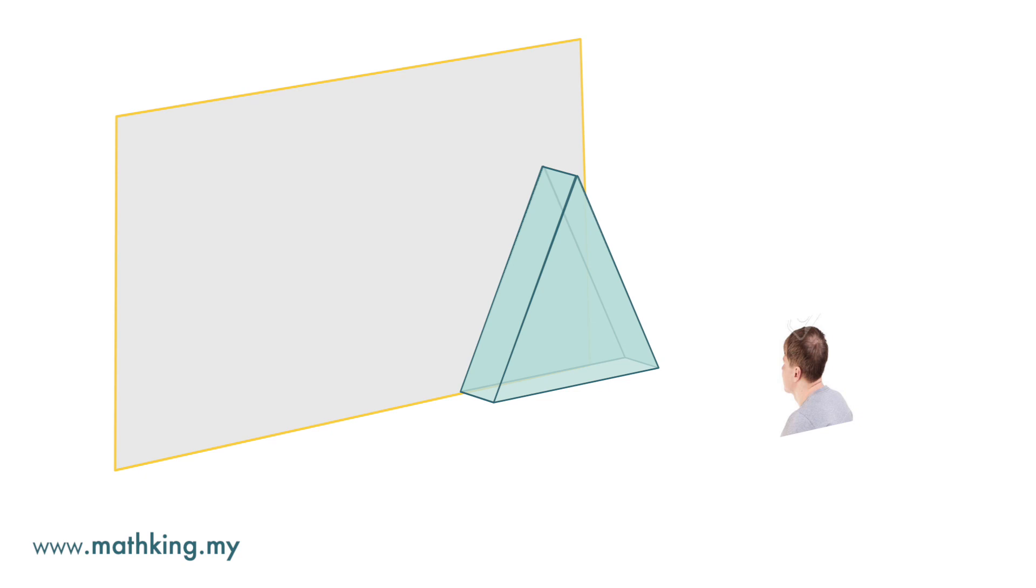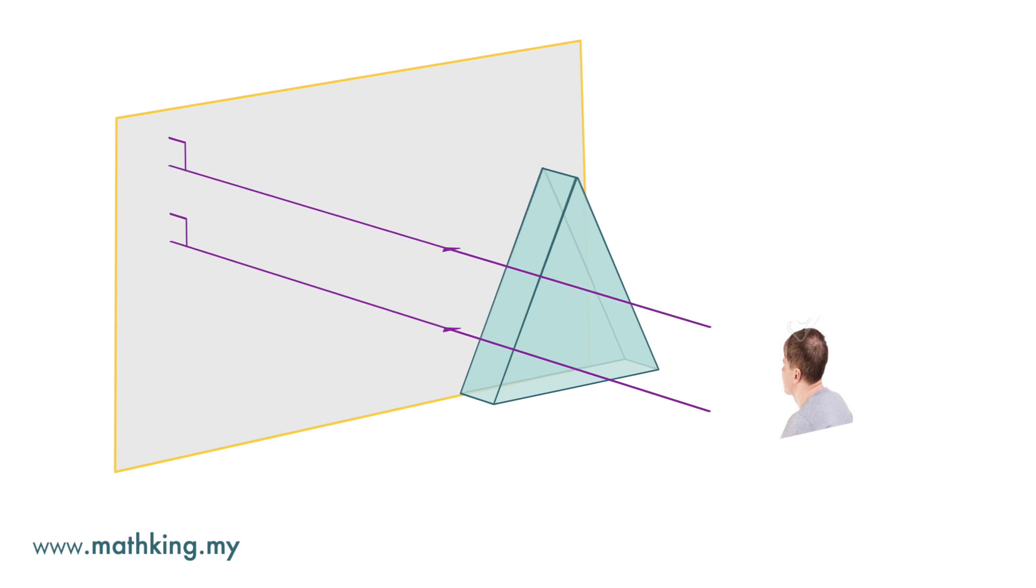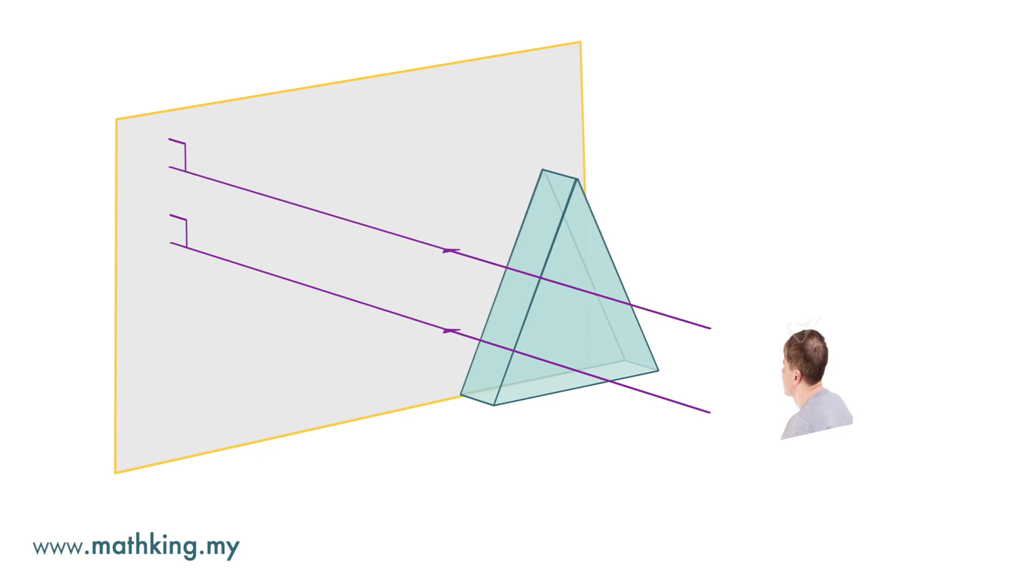In orthogonal projection, we imagine that there are light rays that are parallel and that are normal to the plane of projection, coming from the viewer. When we say that a light ray is normal to the plane, it means that